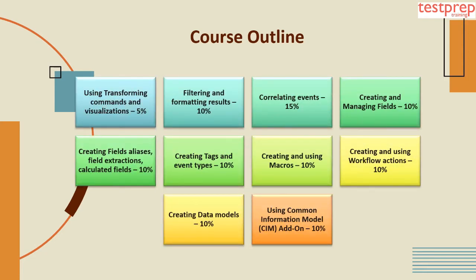Now let's discuss the course outline. Topic 1: Using transforming commands and visualizations, comprising 5% weightage. Topic 2: Filtering and formatting results, 10% weightage. Topic 3: Correlating events. Topic 4: Creating and managing fields, 10% weightage. Topic 5: Creating field aliases, field extractions, and calculated fields, 10% weightage. Topic 6: Creating tags and event types, 10% weightage. Topic 7: Creating and using macros, 10% weightage.